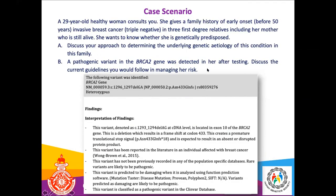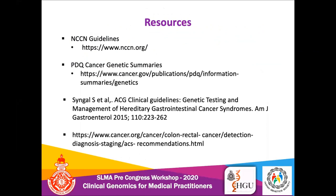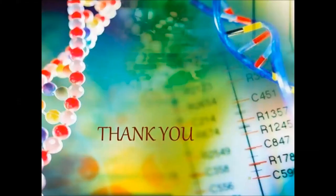That concludes the main presentation. There is also a small case scenario: a 29-year-old lady with a family history of early-onset invasive breast cancer — triple negative — with three first-degree relatives affected, including her mother. She wants to know whether she is genetically predisposed. The approach to this patient and the next steps if she is found to have a BRCA2 gene mutation will be discussed during the case-based discussion. Resources are also provided for further reading on these guidelines.